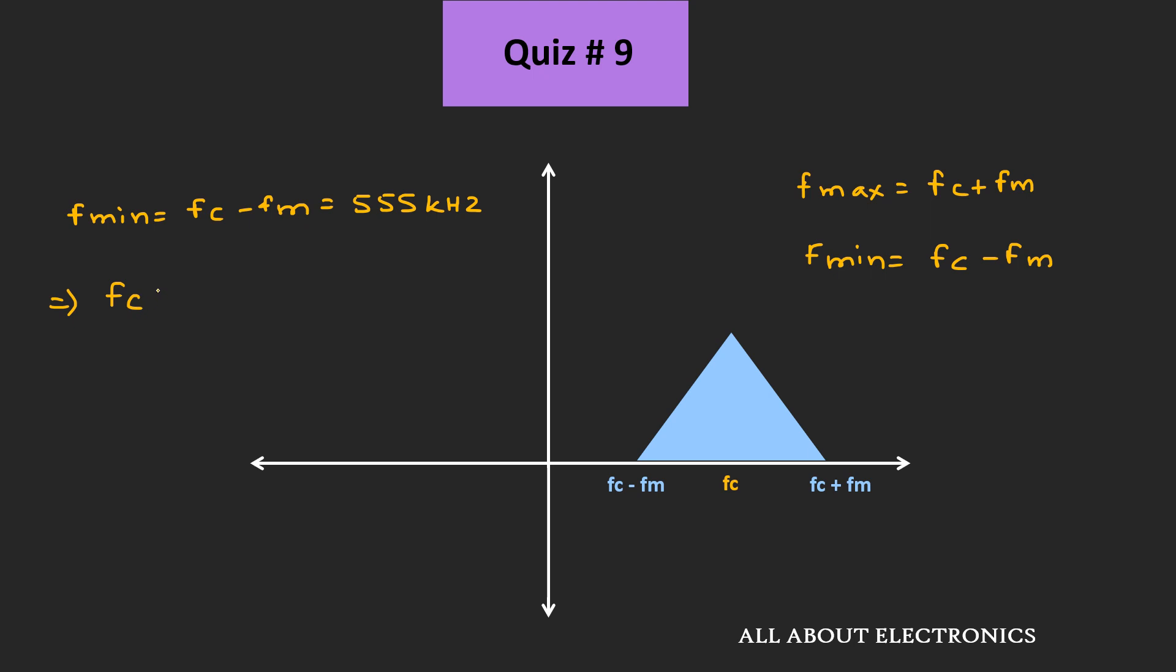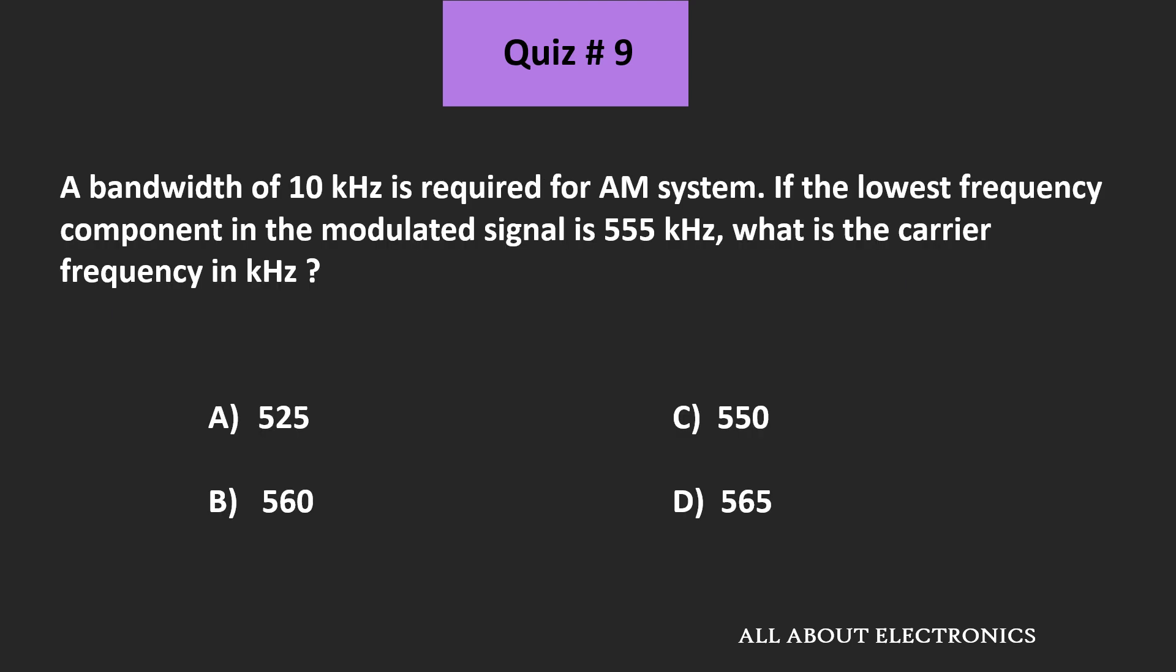Therefore, the carrier frequency fc equals 555 kHz plus fm, which is 555 plus 5. This means the carrier frequency fc is equal to 560 kHz. For the given question, B is the correct answer.